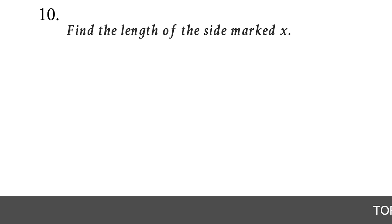Question 29. The following graph represents the score range of students in a math class. How many students are in the class? The x-axis shows score ranges and the y-axis shows the number of students in each range. From the graph: 3 students scored 61-70, 5 scored 71-80, 4 scored 81-90, and 2 scored 91-100. Adding these: 3 + 5 + 4 + 2 = 14. There are 14 students in the class.